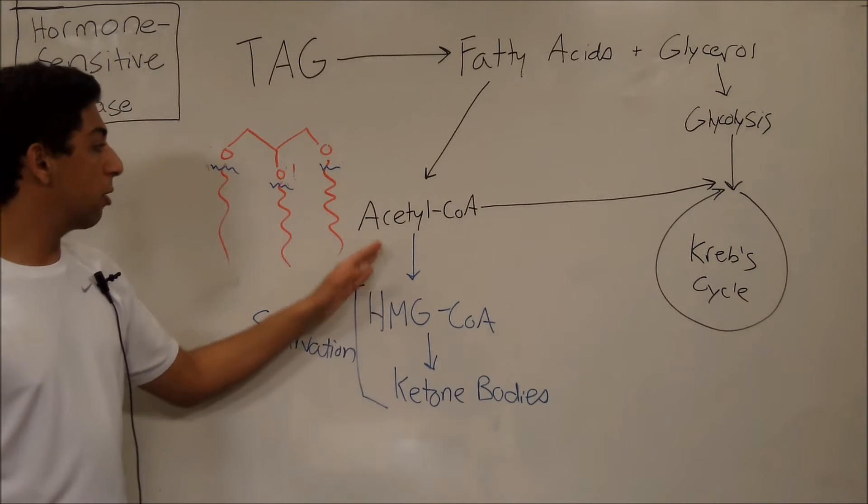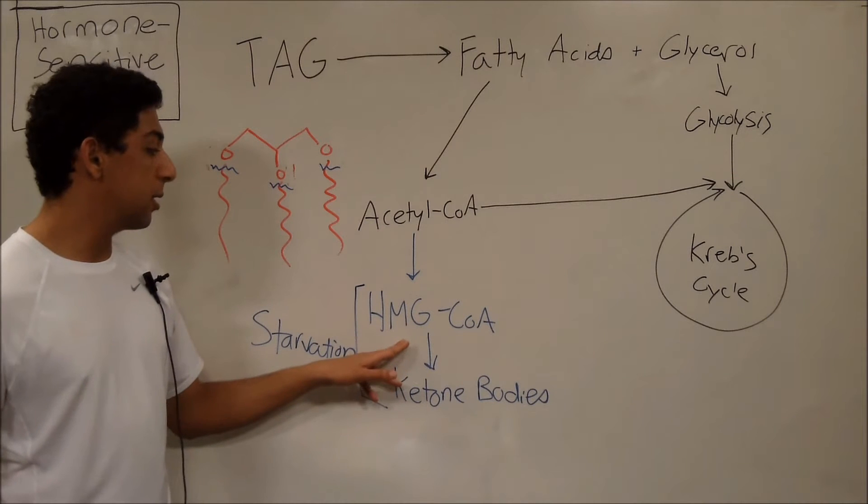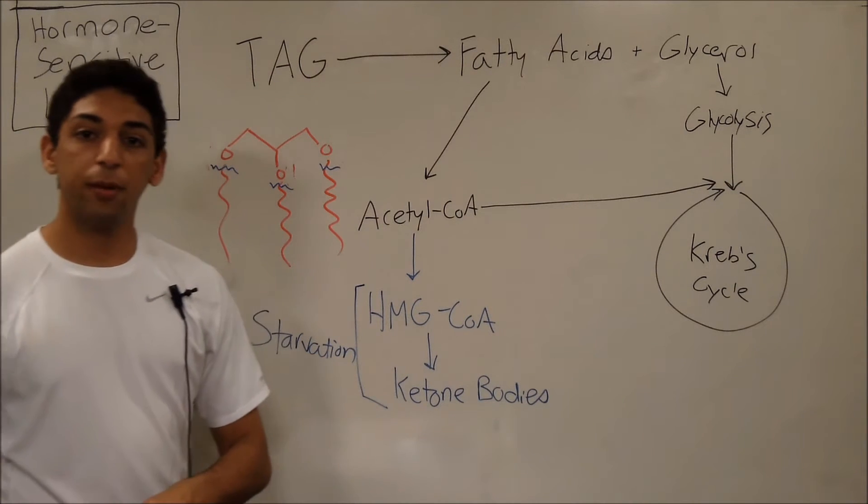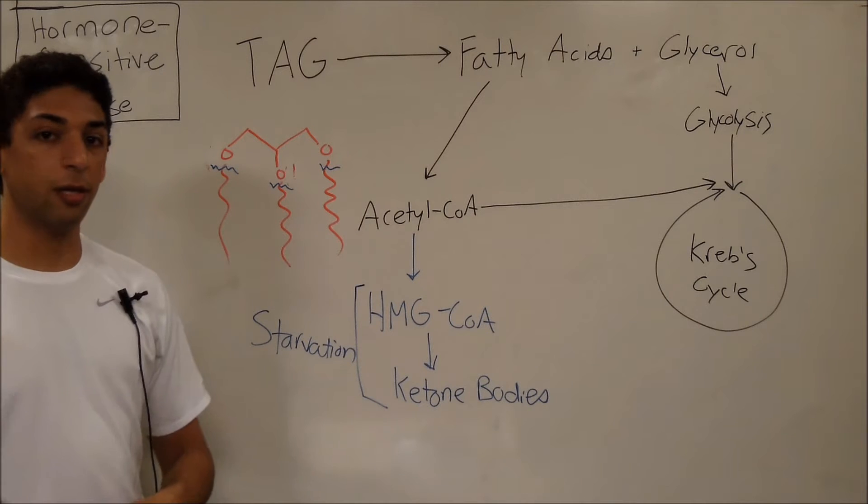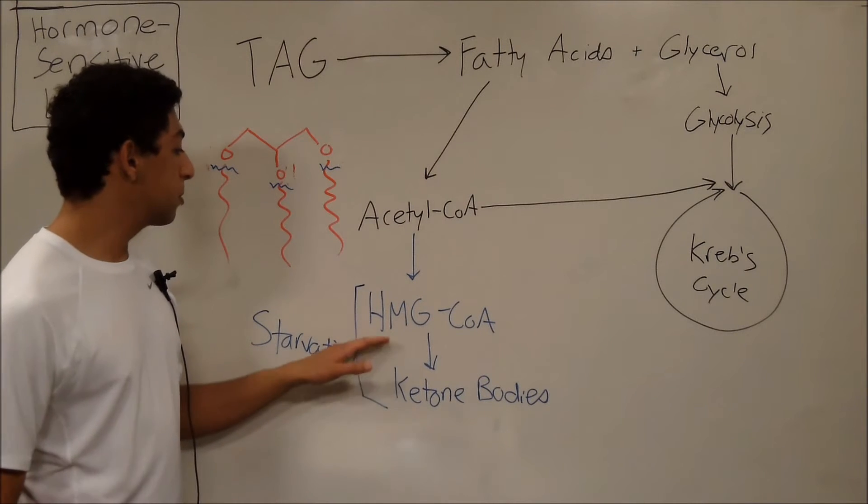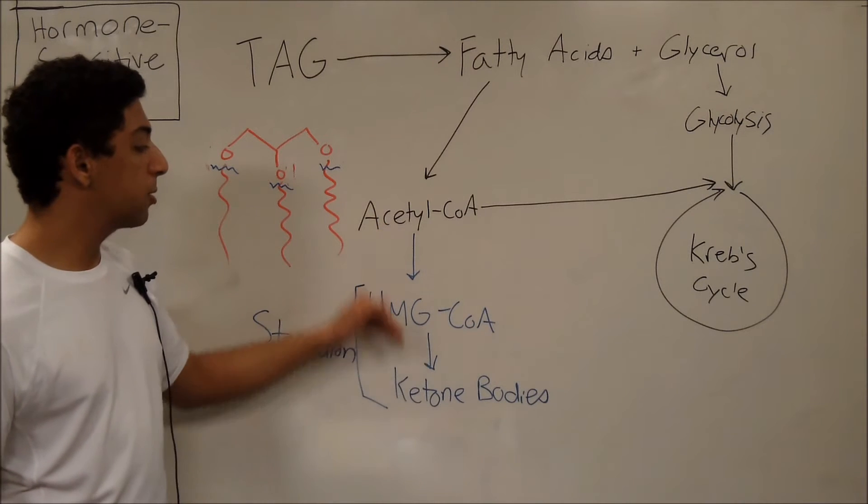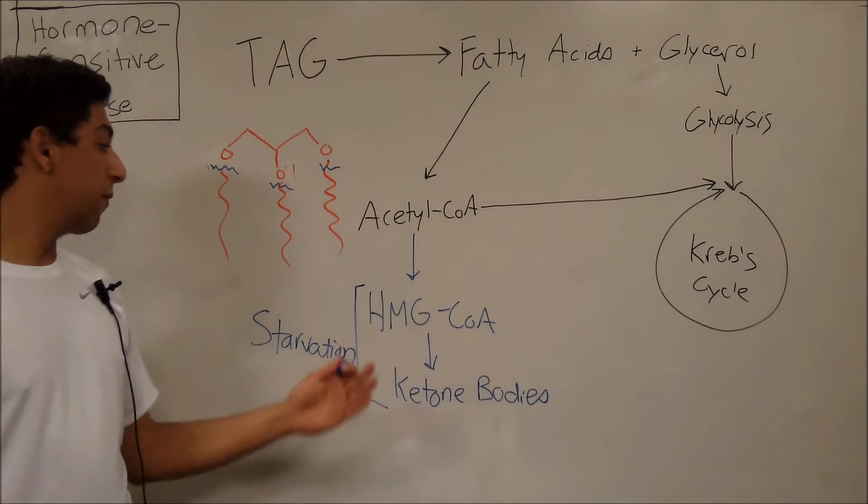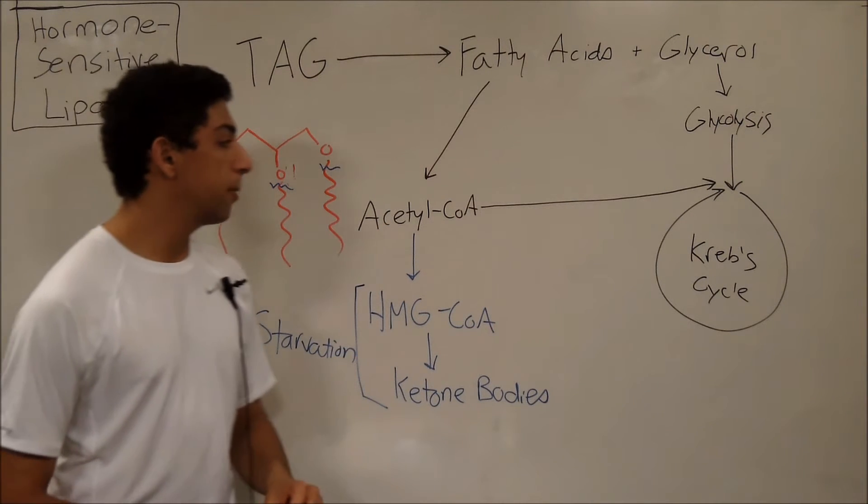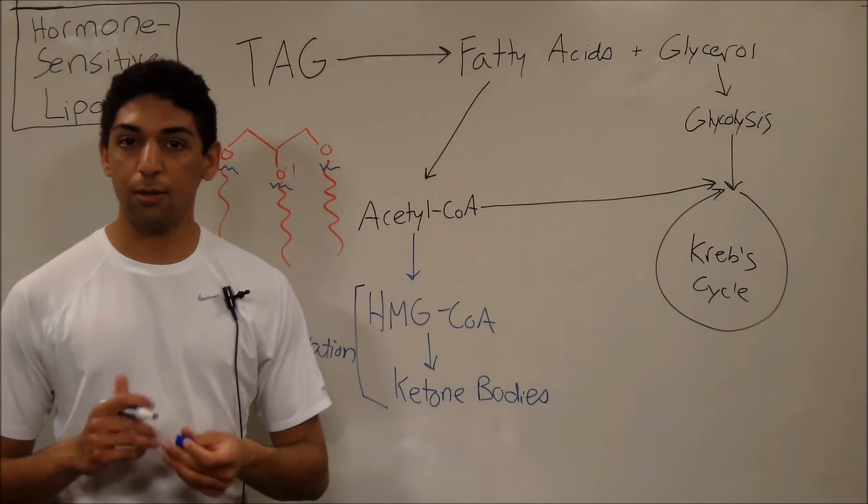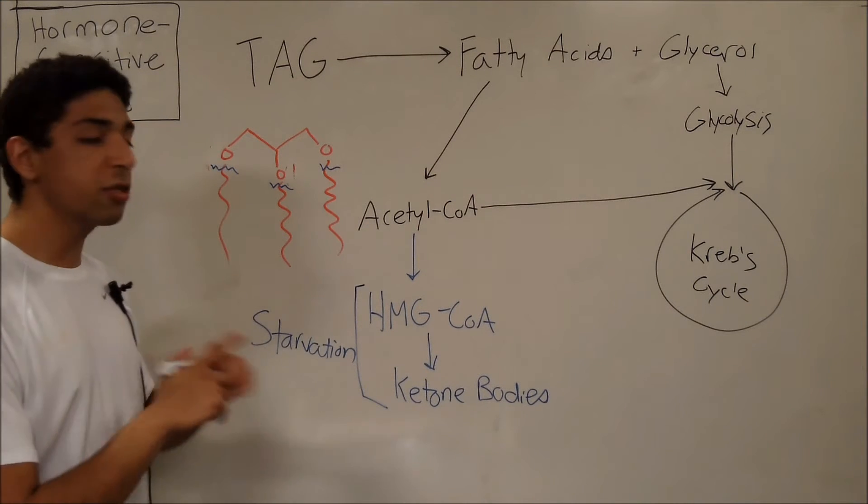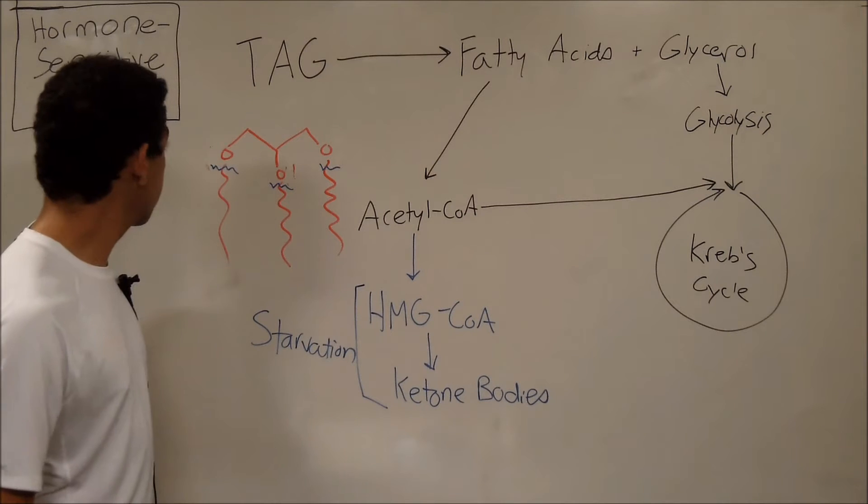The intermediate to go from acetyl-CoA to ketone bodies is HMG-CoA, which should look familiar because it's also the intermediate for cholesterol synthesis. So HMG-CoA can either be on the way to make ketone bodies, if it's starvation, or it can be on the way to make cholesterol if you're not starving. So that's just an aside, not what we're going to focus on today.